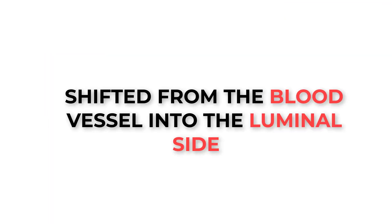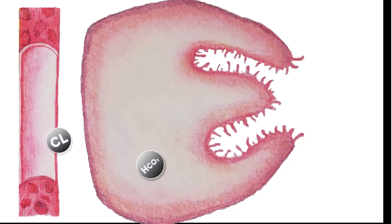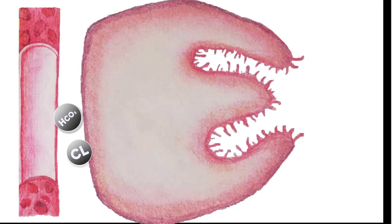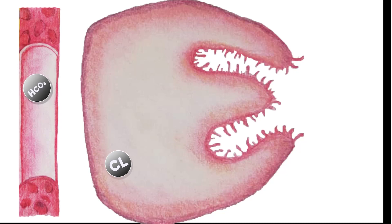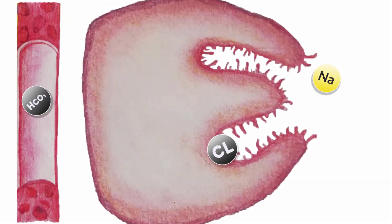Step three: chloride ions are shifted from the blood vessel into the luminal site. Chloride is the second ingredient in our recipe for HCl. Chloride is exchanged with bicarbonate through a chloride-bicarbonate antiport, and then the chloride ions are pumped via passive transport through the canalicular system into the luminal site.